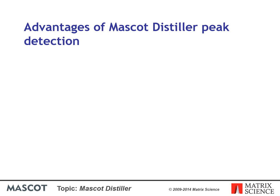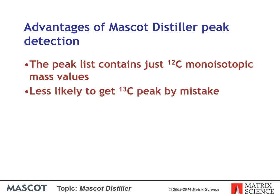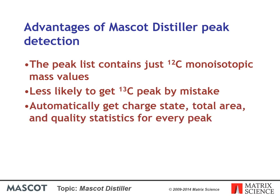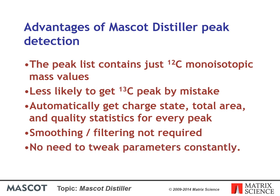The advantages of Mascot Distiller peak detection are: the peak list contains just carbon-12 monoisotopic mass values, so we are less likely to get a carbon-13 peak by mistake. We automatically get the charge state, total area, and quality statistics for every peak, so we don't need smoothing or filtering. And there should be no need to tweak parameters constantly.